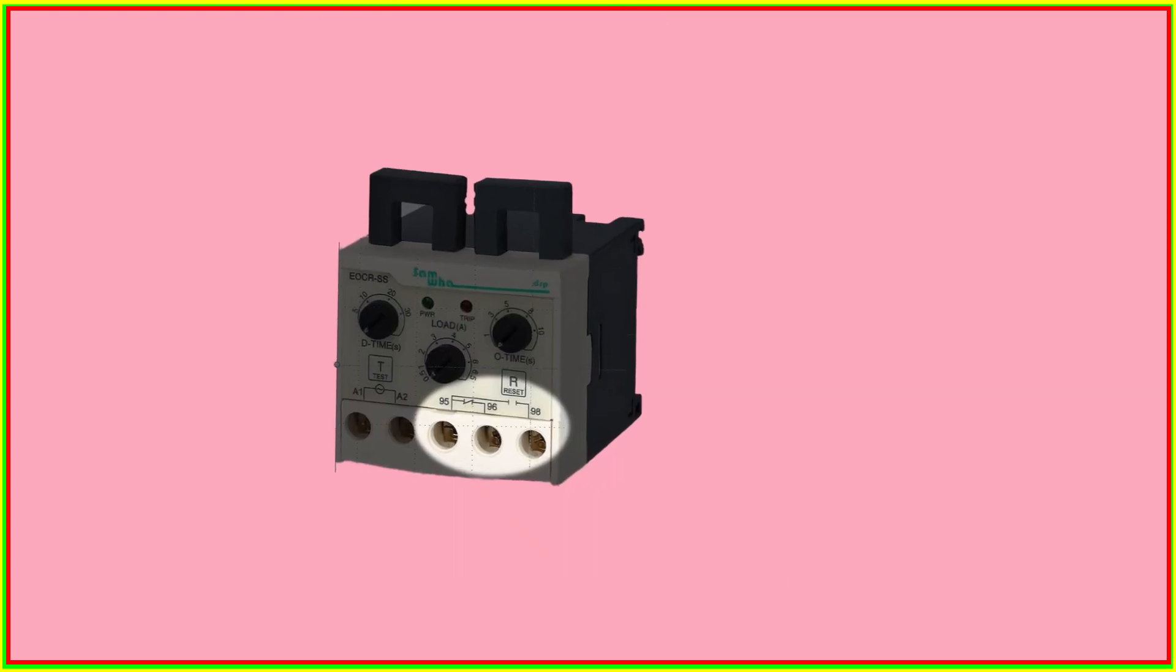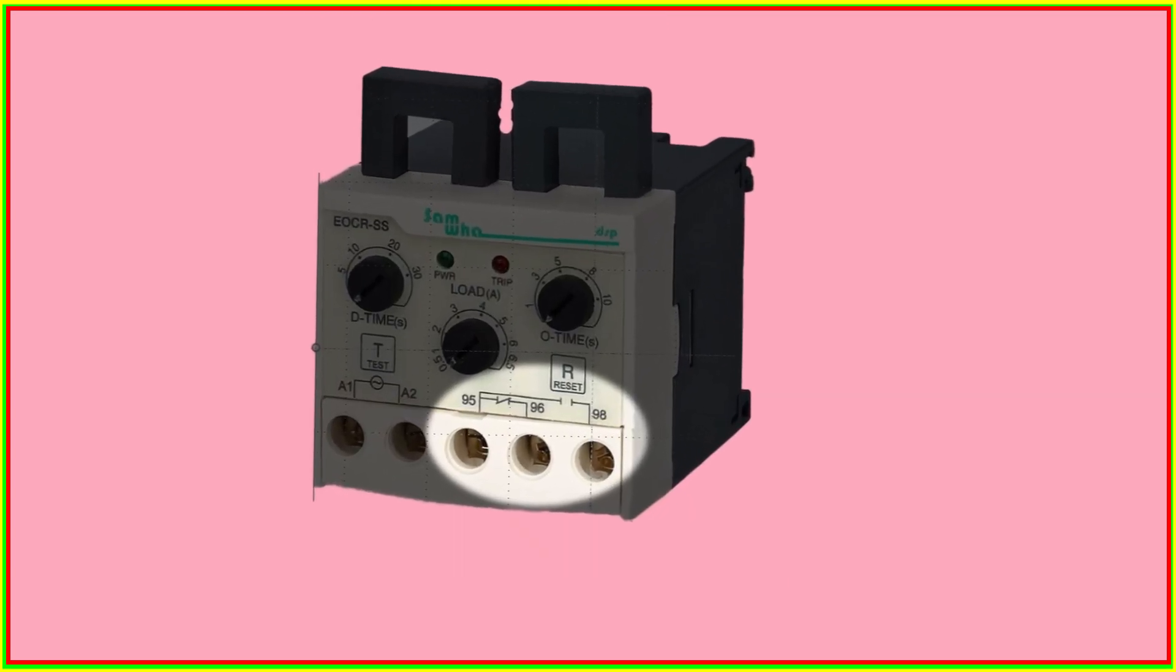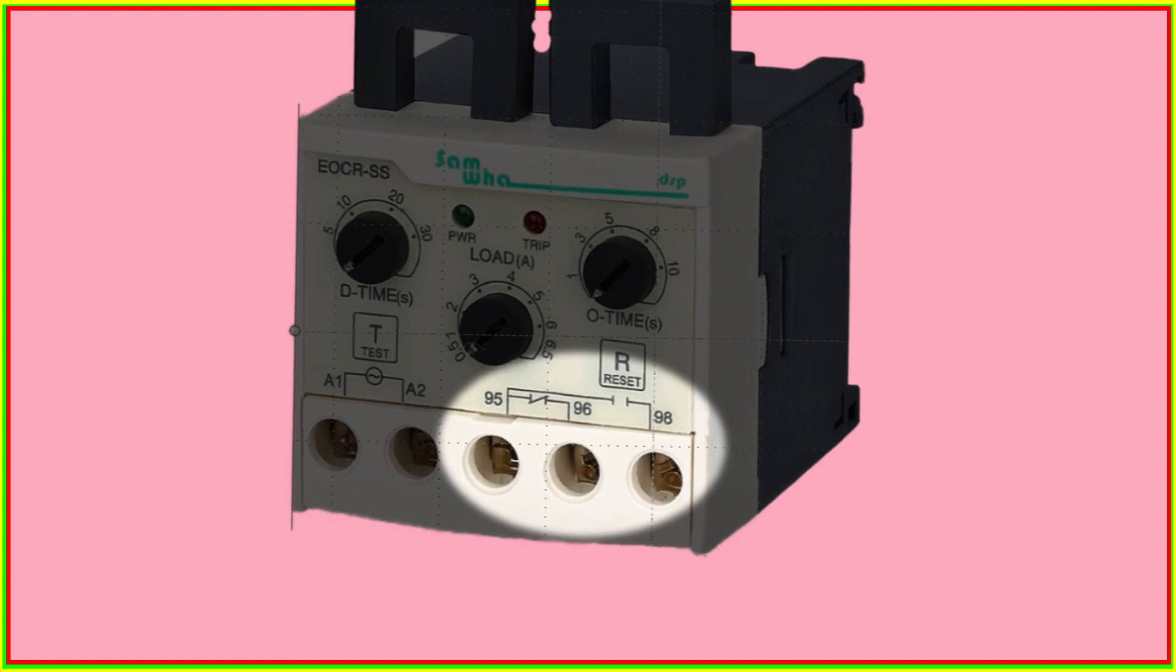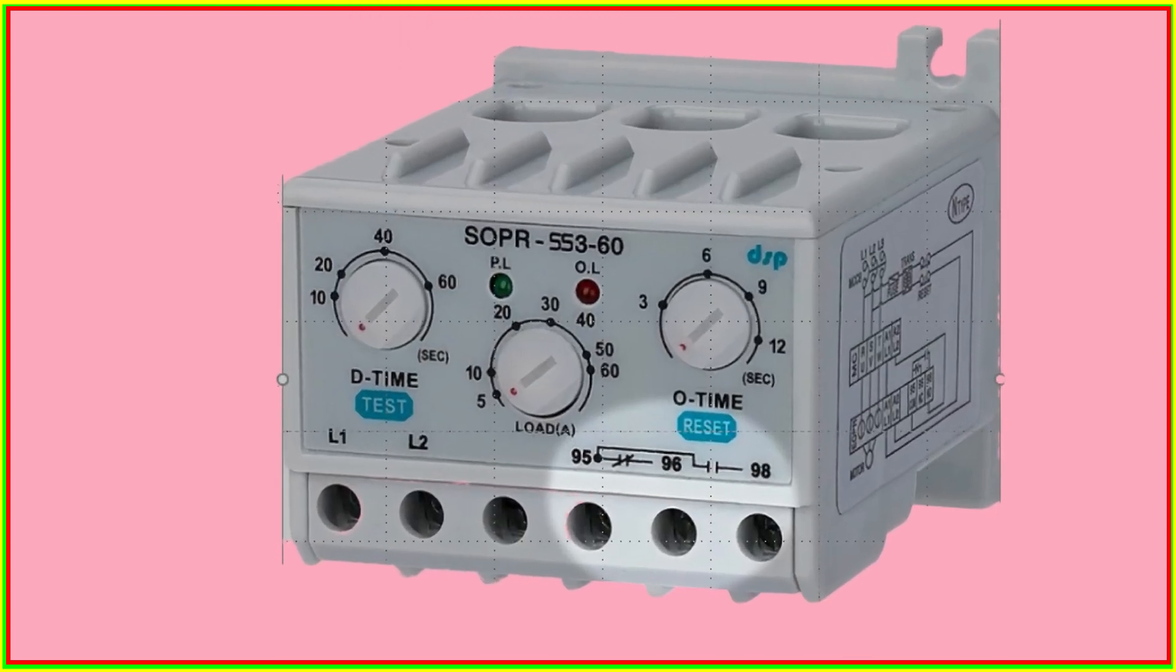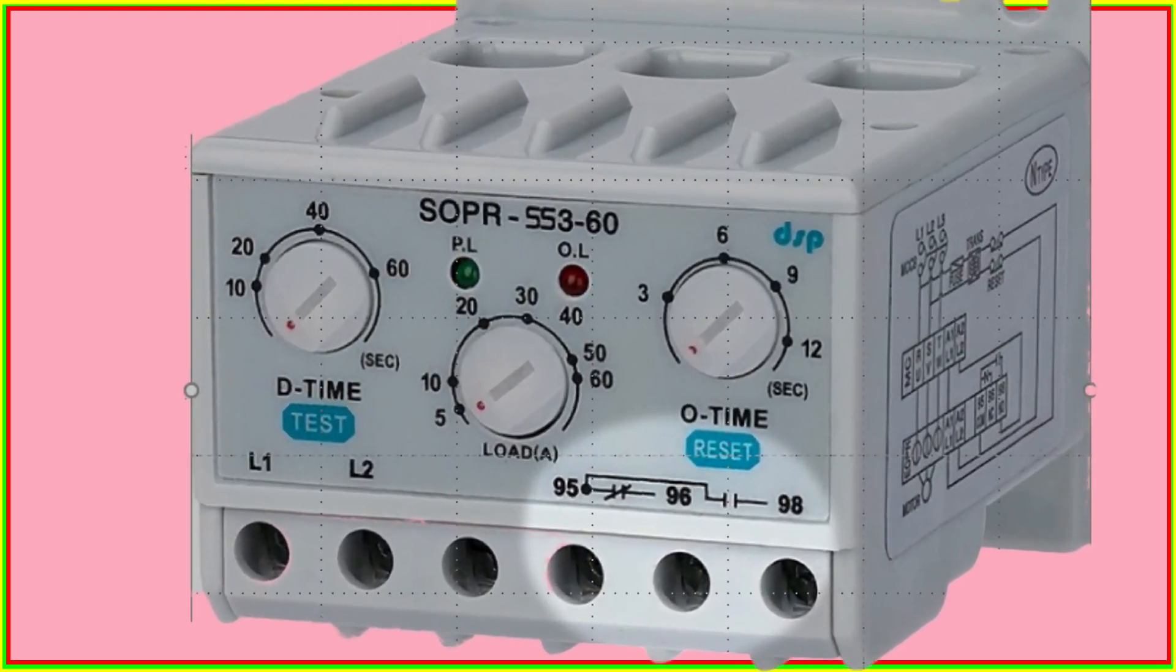Some overload relays have only three terminals, namely 95, 96, and 98. Terminal 96 serves as the common terminal, while terminal 95 is the normally closed contact and terminal 98 is the normally open contact.